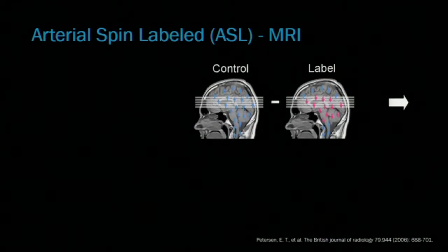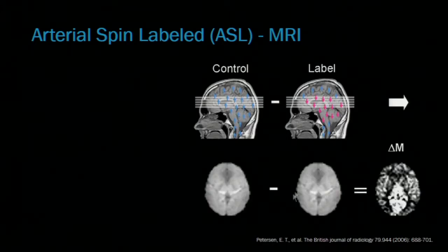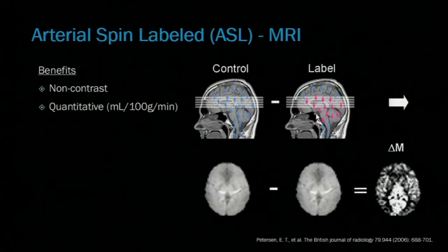Arterial spin labeling is a perfusion MRI technique that uses water in the blood as endogenous contrast. With this technique, we acquire a control image with the inflowing blood left at equilibrium and a label image where we invert the inflowing blood. The difference between these images is proportional to their perfusion into our imaging plane. Since we're only imaging water in the blood, this technique does not require a contrast injection, and we can use it to create quantitative perfusion maps, which would be beneficial for monitoring patients over time.